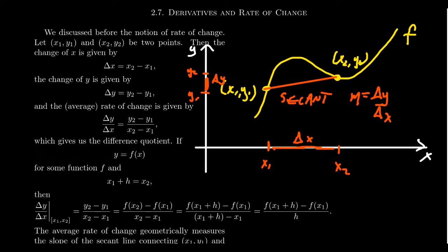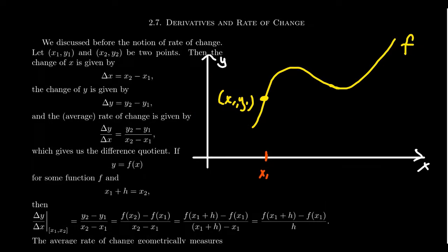The average rate of change measures the slope of the line going from one point to the other point — essentially, if we flattened the function, on average the slope of that line would be this average rate of change. Let's transition our perspective now to the so-called instantaneous rate of change. What if we only have one point — say x1, y1 — and we're interested in the tangent line there? How would we figure out this instantaneous rate of change, which would be the slope of the tangent line?